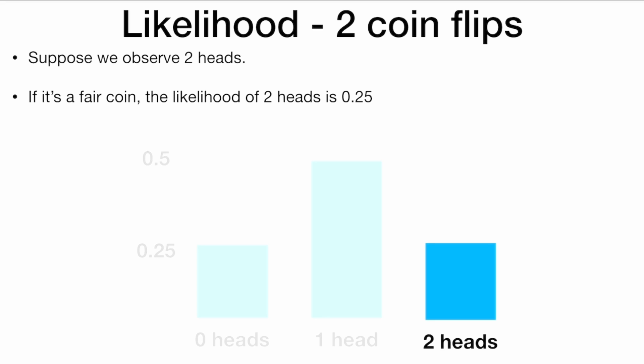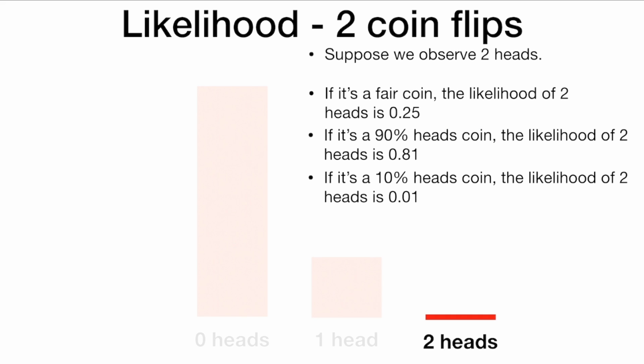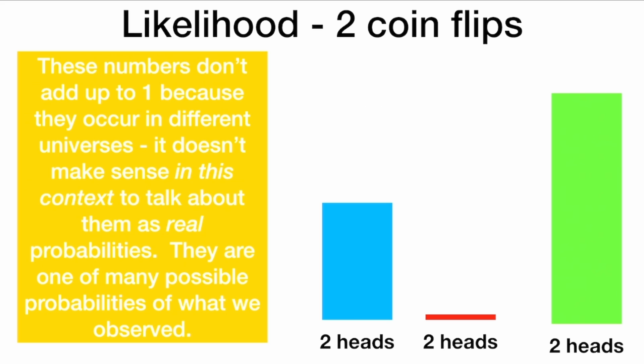But let's flip the situation around. Suppose we just observe two heads. Now we know if it was a fair coin, the likelihood of two heads is 25%. But if it's a 90% heads coin, the likelihood of two heads is 0.81. If it's a coin that lands on heads 10% of the time, the likelihood of two heads is only 1%. These numbers don't add up to one because they occur in different universes. It doesn't make sense in this context to talk about them as real probabilities — they are one of many possible probabilities of what we observed. These numbers do not add up to one.